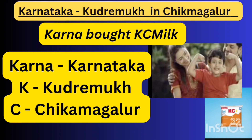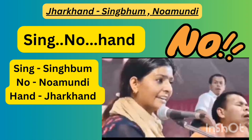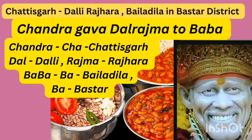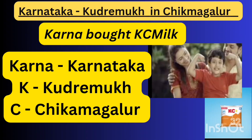Hope you understood. Let's recall all the shortcuts one by one: 'One day Gauri gave Badam to Maya.' 'Sing, No, Hand.' 'Chandra gave Dal Rajma as Prasad to Baba.' 'Retna ate Gobi Manchurian.' 'Karna bought K.C milk.' That's all — hope this video is helpful.